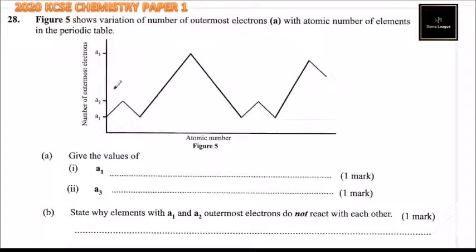This is question number 28 and we are told figure 5 shows variation of number of outermost electrons A with atomic number of elements in the periodic table. So we have variation here. We have number of outermost electrons, atomic number.